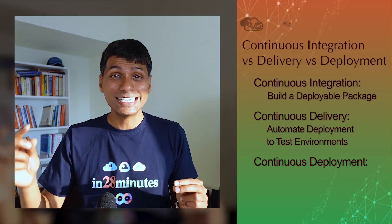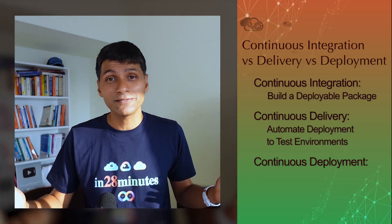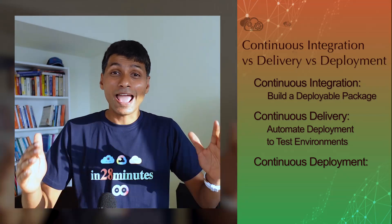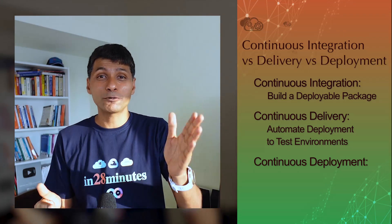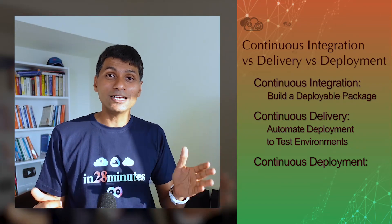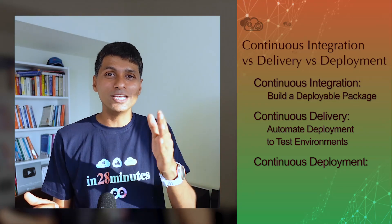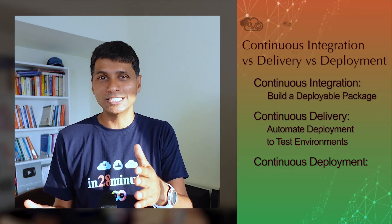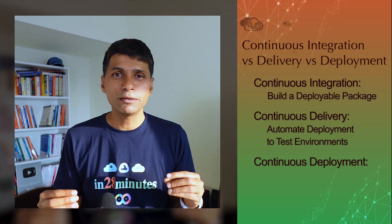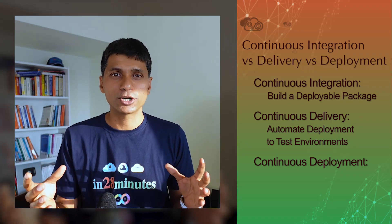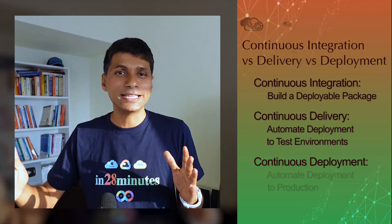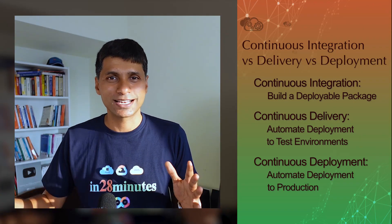Continuous Deployment is the next level. Why do we build software? We want to deploy it to production and have end users make use of it. In software development, we typically have a number of environments: dev, QA, stage, and production. In Continuous Delivery, we only go up to the initial levels, maybe up to the stage environment. A lot of enterprises have a manual approval before they approve the deployment to production, but with Continuous Deployment, you automate the entire deployment to production as well.